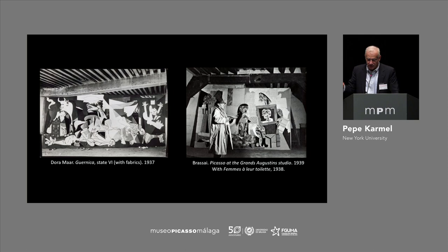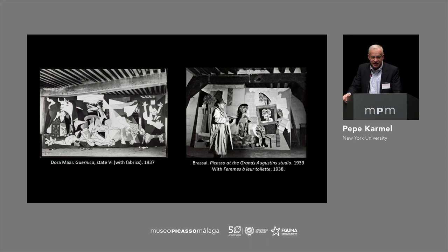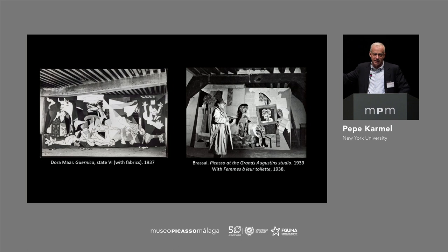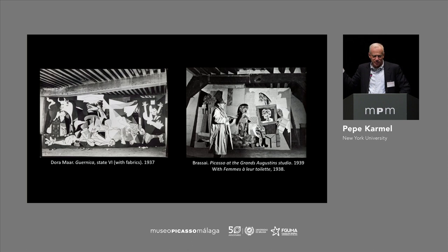In the same studio, a few months later, he began work on the maquette for what would become a very elaborate tapestry, the work known as Femme à leur toilette. I think if we put these two photographs together, you could see him coming up with an idea while working on Guernica, deciding it doesn't work for that painting, and then coming back to the same idea — he doesn't want to abandon it.